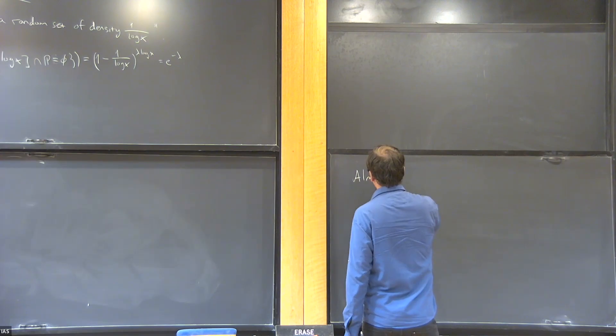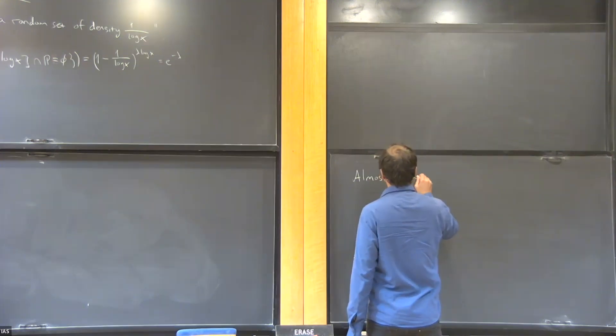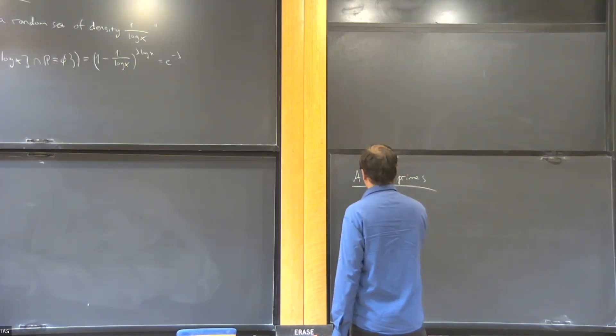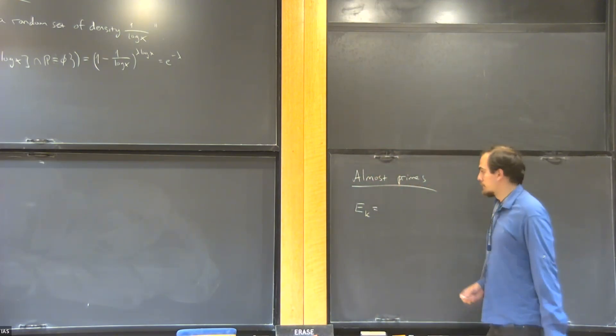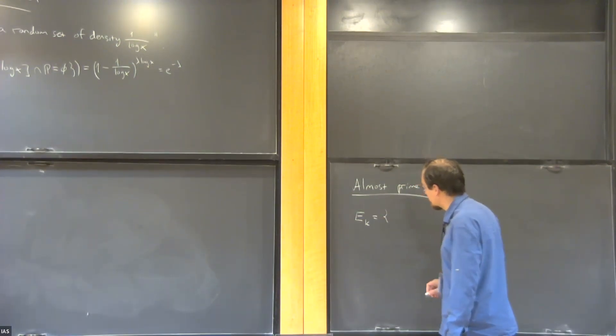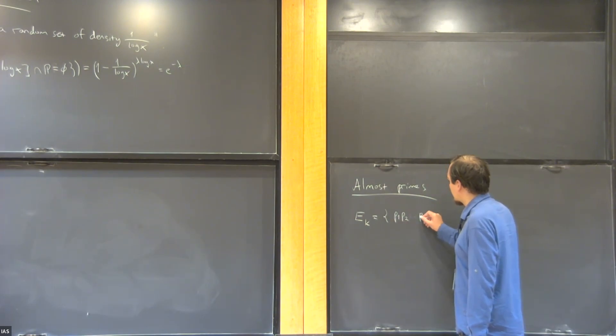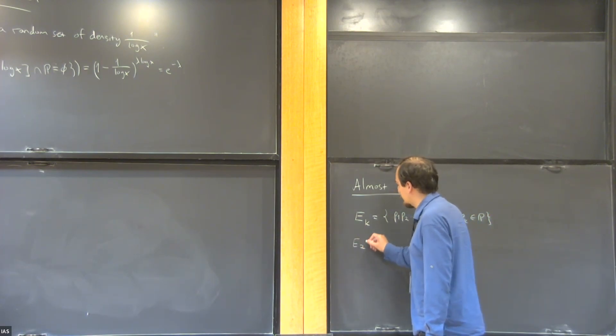What do I mean by an almost prime? I simply mean a number with a given small number of prime factors. I'm going to call E_k the set of numbers that have exactly k prime factors, counted with multiplicity. So in particular, E_2 is what's usually called the semi-primes.